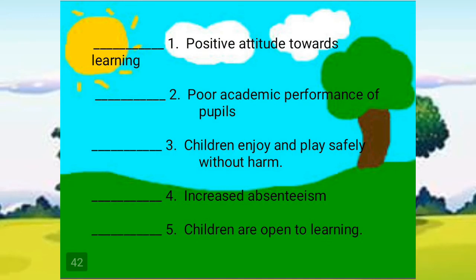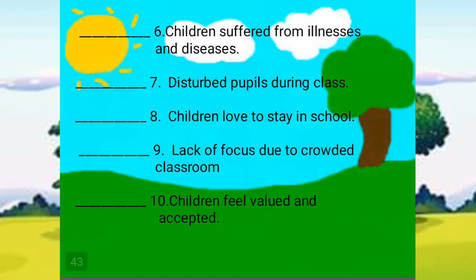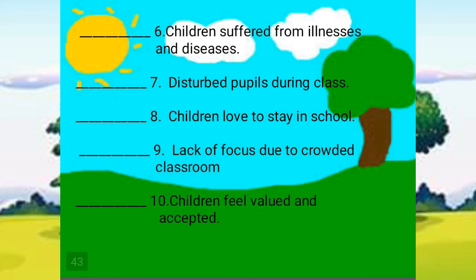Number 3: children enjoy and play safely without harm. Number 4: increased absenteeism. Number 5: children are open to learning. Number 6: children suffered from illnesses and diseases. Number 7: disturbed pupils during class. Number 8: children love to stay in school. Number 9: lack of focus due to crowded classroom. And number 10: children feel valued and accepted.